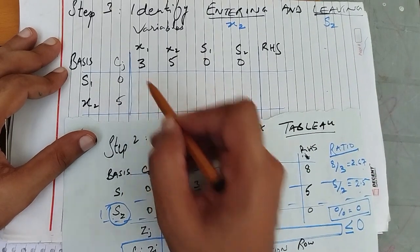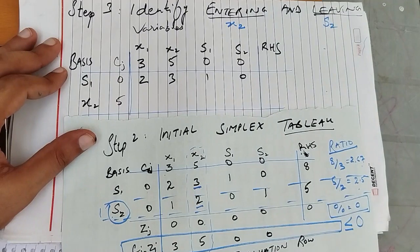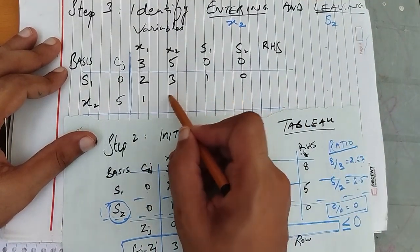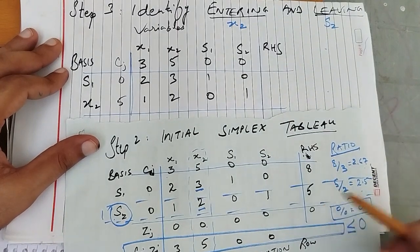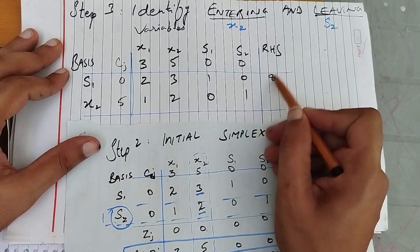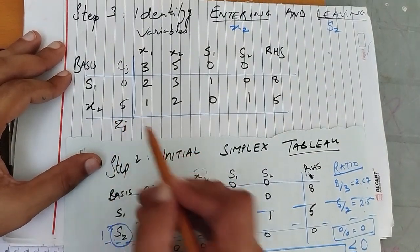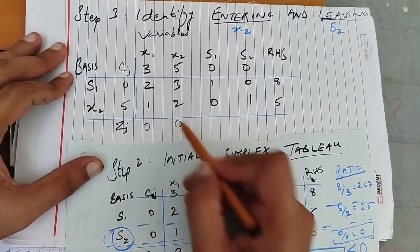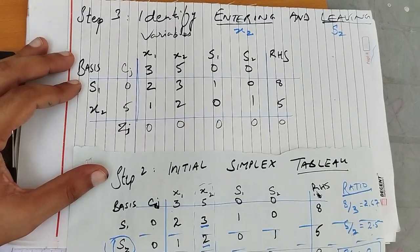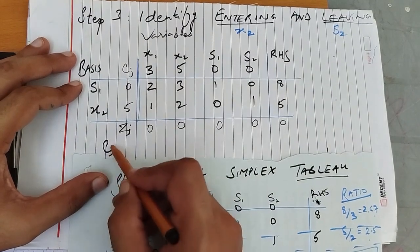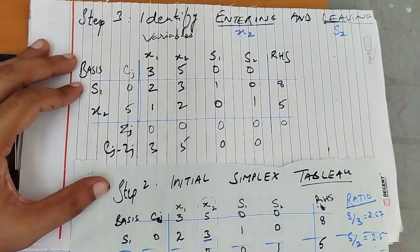Let's take the constraint row coefficients. The first constraint row is 2, 3, 1, 0 with right-hand side 8. The second constraint row is 1, 2, 0, 1 with right-hand side 5. The Zj row was 0, 0, 0, 0. And the net evaluation row — Cj minus Zj — was 3, 5, 0, 0.